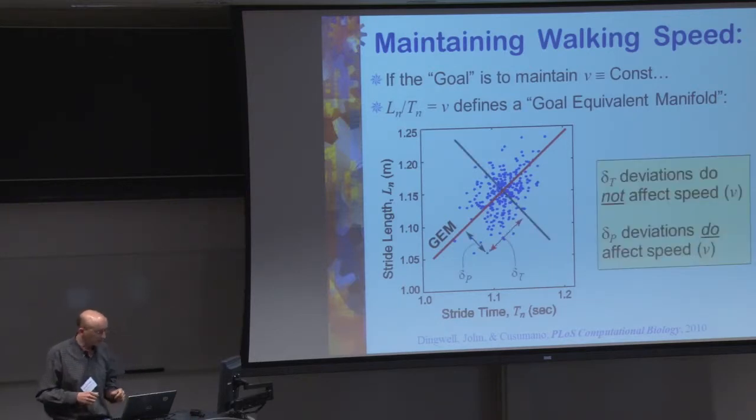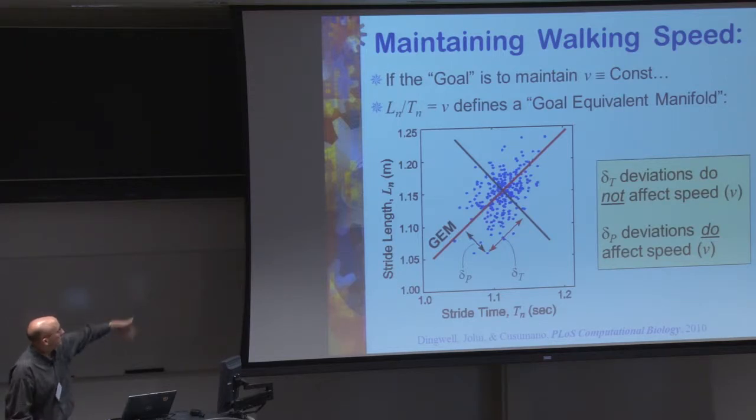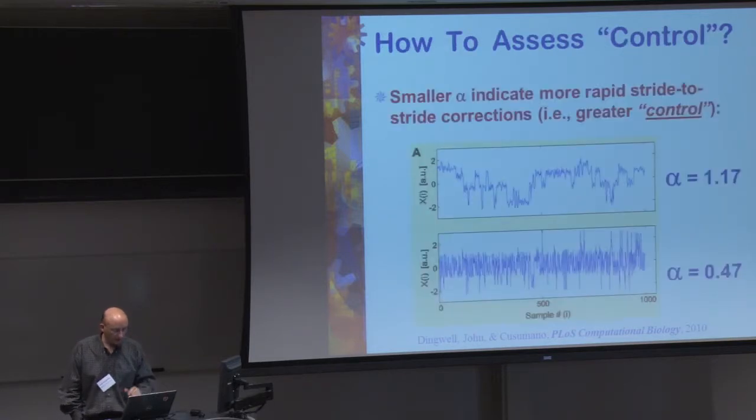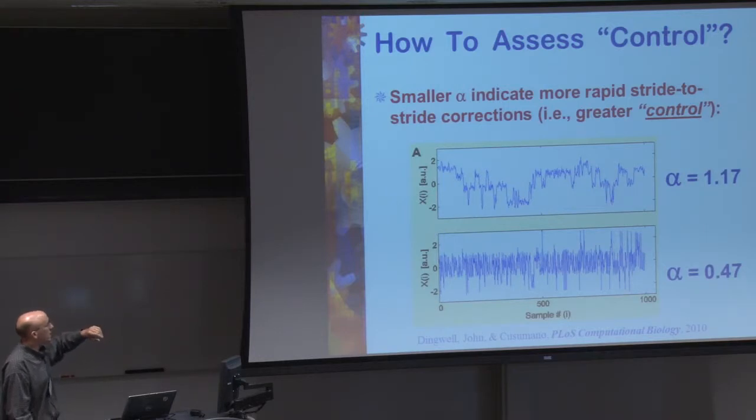So in this case, for this task, all the variability going up and down along the GEM is what we would consider good variability or at least not relevant to achieving the goal of maintaining speed. And it's the fluctuation dynamics of things going on perpendicular to that goal equivalent manifold, that GEM in that space, that are the things that we're interested in. Variability is one thing that we're interested in, but we're also interested in step-to-step control of these kind of things. And I can tell you a little bit more about how we actually assess that. But one of the things we're interested in is finding a way to quantify essentially what is the statistical persistence from step-to-step of something.